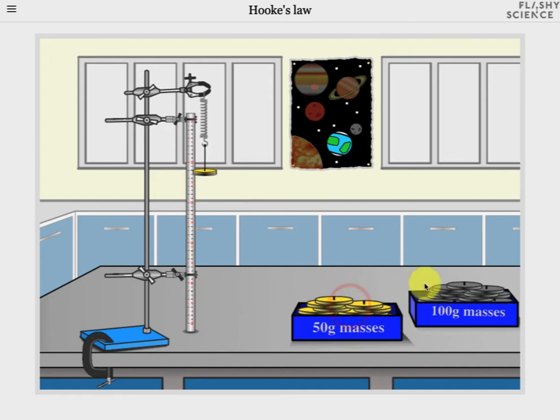To add mass simply click on the 50 or 100 gram masses and they'll be added to the mass holder, and the spring will extend in response. You can add masses in any combination you wish.